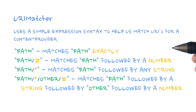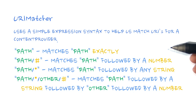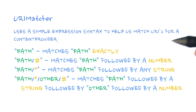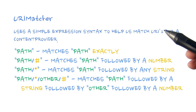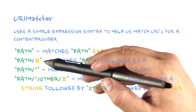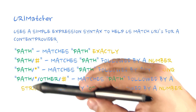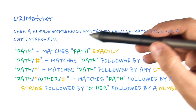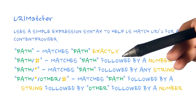Once we have the integer constants, we can easily use them as switch statements. URI matcher provides an expression syntax to match various URIs that works a bit like regular expressions. Hash symbols will match a number, and an asterisk will match any string. Here are some examples.